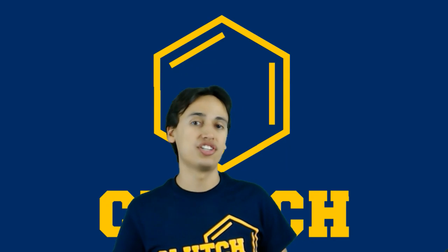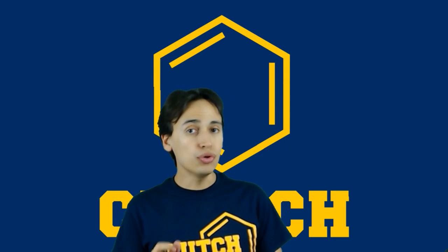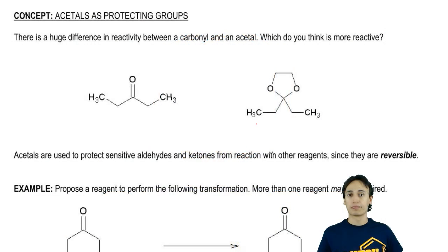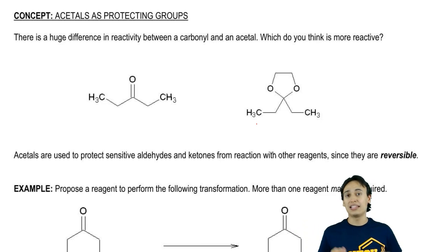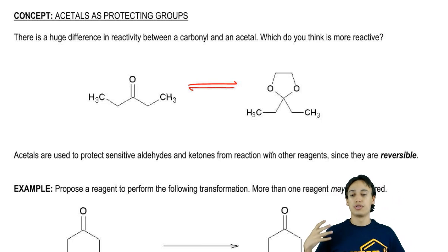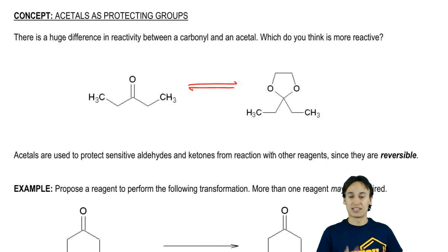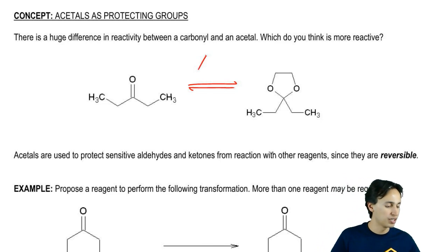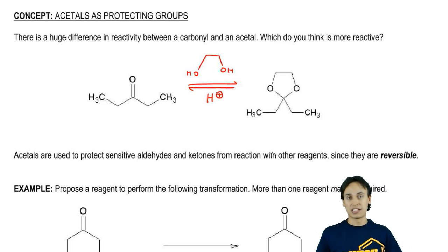Now let's talk about a synthetic application of acetals — using acetals as protecting groups. These two molecules above are in equilibrium. We've learned that if you expose a carbonyl to alcohol in acid, you can make an acetal. In this case, since this is a cyclic acetal, I would expect to use a cyclic diol in combination with acid (H+) to give the cyclic acetal.